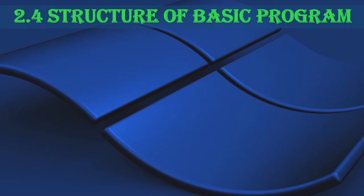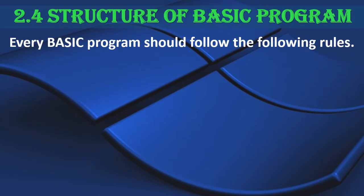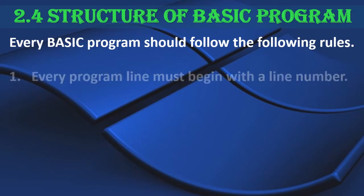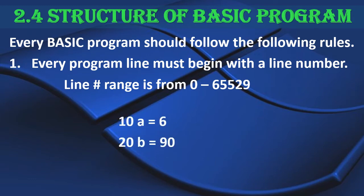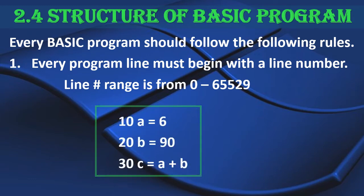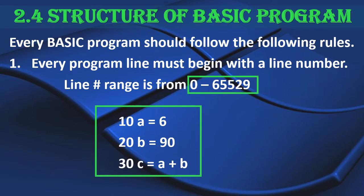For the structure of a basic program, we have to follow some rules. The first rule is that every program line must begin with a line number. The range is from 0 to 65,529. However, the convention is to use 10, 20, 30, and so on. You can use this convention or any number within the given range.